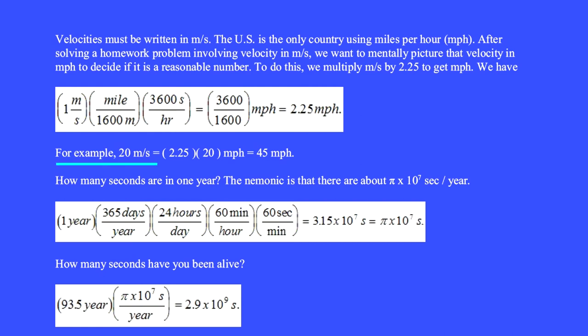For example, 20 meters per second is 2.25 times 20 equals 45 miles per hour.